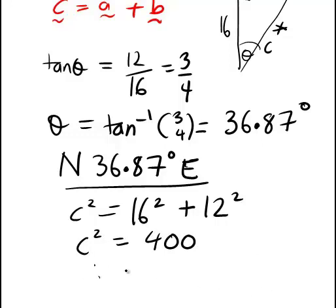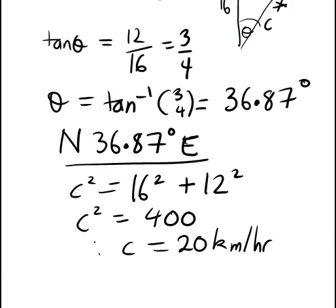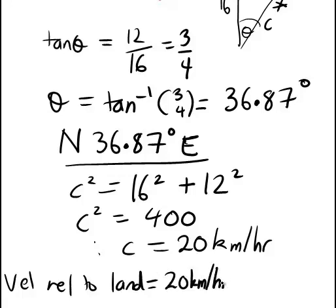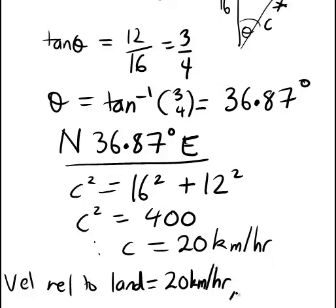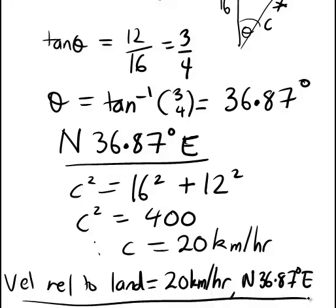We find C is plus or minus 20. But because speed here is a positive number, obviously, that will be 20. Speed was measured in kilometres per hour. The velocity will be both the speed and direction combined. Therefore we can say velocity relative to land is going to be 20 kilometres per hour. We also know the angle of that, that's going to be north 36.87 degrees east. So that is an example of applying the principle of vector addition.